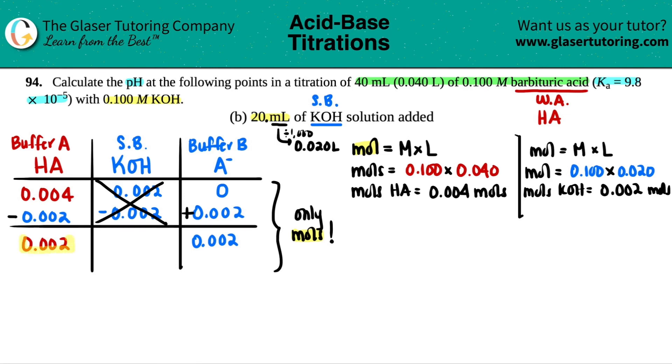Now, since you have numbers for both your buffer acid and your buffer base, we can now use the Henderson-Hasselbalch equation. You can only use the Henderson-Hasselbalch if you have both numbers of the acid and the base. So let's go for it. The equation is this one right here. pH equals pKa plus the log of the base divided by the acid. We just found out what the numbers for the base and the acid are. They're the same. The base number is 0.02, and the acid number is 0.002.